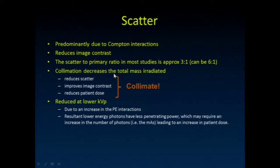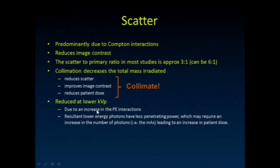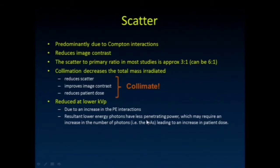So we always want to make sure we collimate. It reduces scatter because it reduces the volume of irradiated tissue, and if you irradiate less tissue, those X-rays can't end up scattering back into your area of interest. It improves our image contrast and also ends up reducing the patient dose. Scatter is also reduced at lower KVP because there's an increase in photoelectric interactions the lower the KVP is. But that's not always practical — when we're doing a lateral pelvis in an adult, the mAs that you have to use is so high that the dose can maybe be prohibitive.